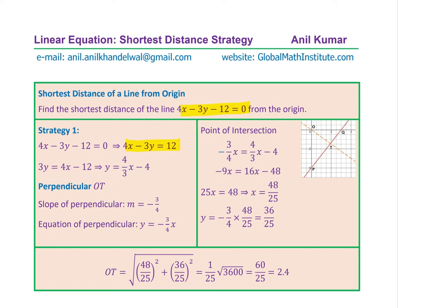Rearrange to write the equation in the form y equals to mx plus b. When you do that, you find that the slope m is equal to 4 over 3 — this is for the given line. For the perpendicular line, the slope will be the negative reciprocal, so it is minus 3 over 4. This particular line O to T is going through the origin, so its equation will be y equals to minus 3 over 4 times x. Once we know the equation of the perpendicular line, we can find the point of intersection by substituting this value for y and then solving for x.